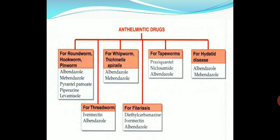Here is another classification from the eighth edition of KD Tripathi, based on the types of worms present inside the gastrointestinal tract. For treatment of roundworm, hookworm, and pinworm, we can use albendazole, mebendazole, pyrantel pamoate, piperazine, and levamisole. For threadworm: ivermectin and albendazole. For whipworm and Trichinella spiralis: albendazole and mebendazole. For filaria: diethylcarbamazine, ivermectin, and albendazole. For tapeworms: praziquantel, niclosamide, and albendazole. For hydatid disease: albendazole and mebendazole. Notably, albendazole can be used for most types of worms.